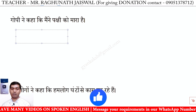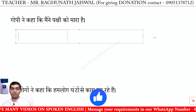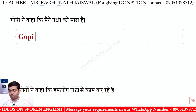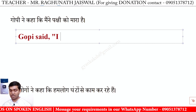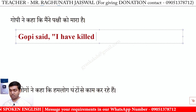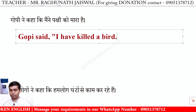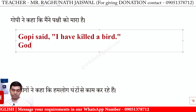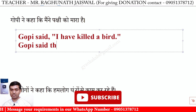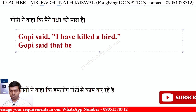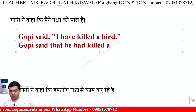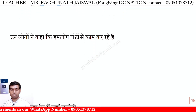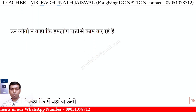Gofi ne kaha ki maine ek chidiya maari hai. Direct: Gofi said, 'I have killed a bird.' Indirect: Gofi said that he had killed a bird. In logon ne kaha ki hum log ghanton se kaam kar rahe hain.